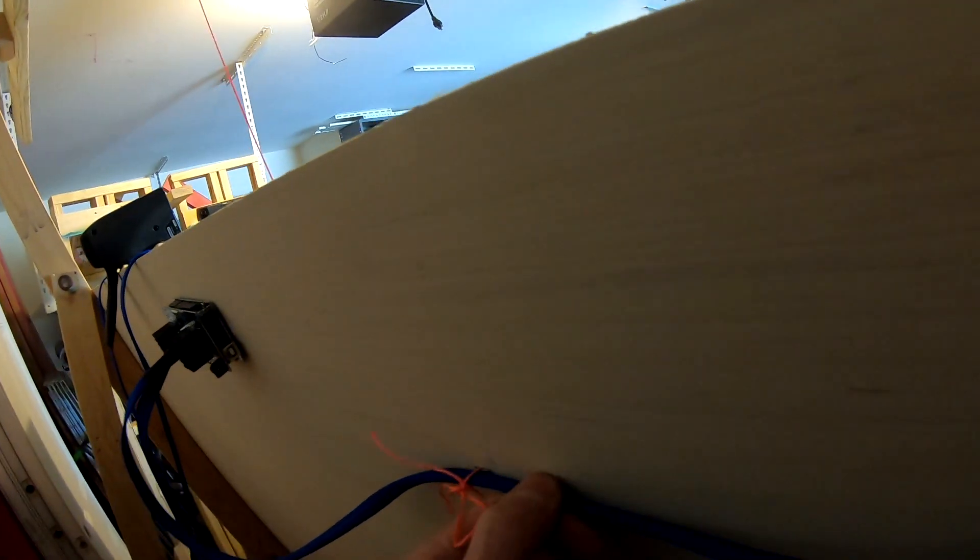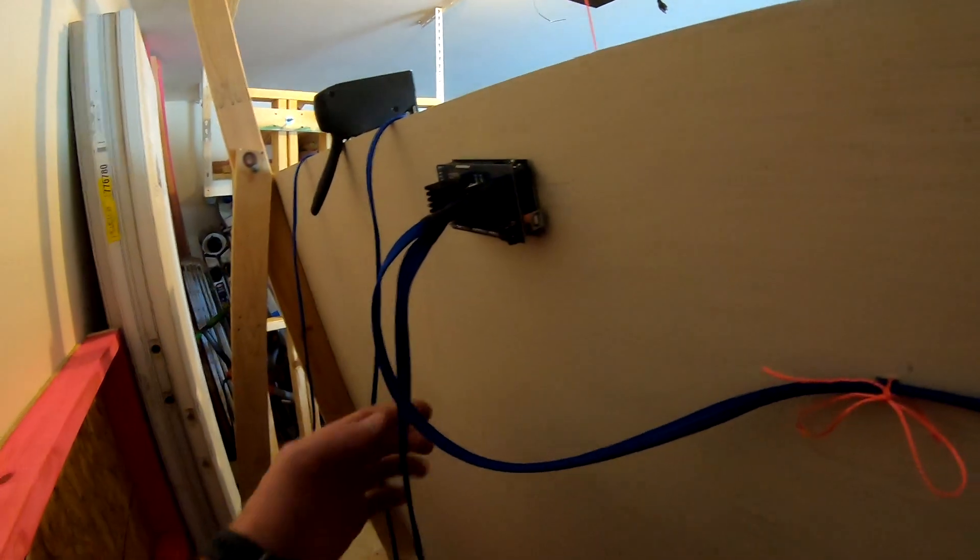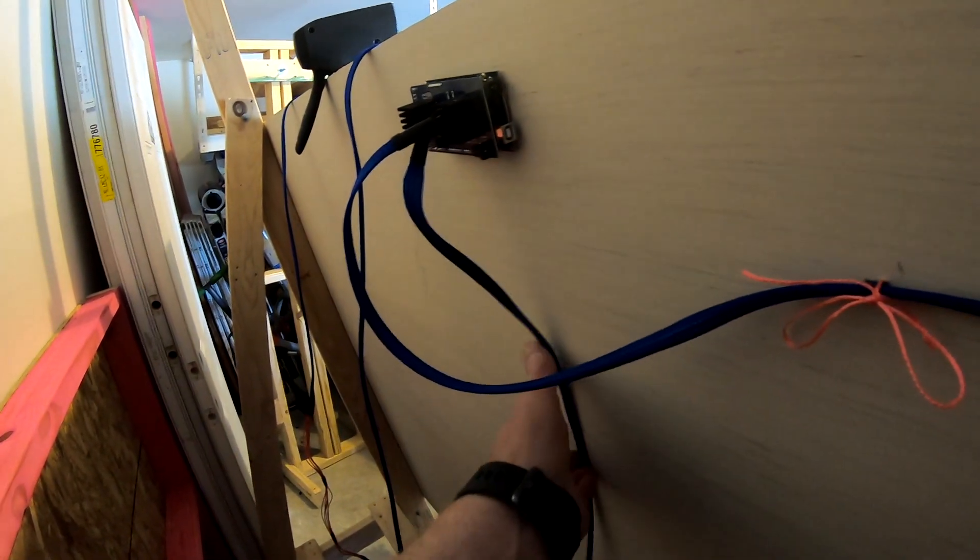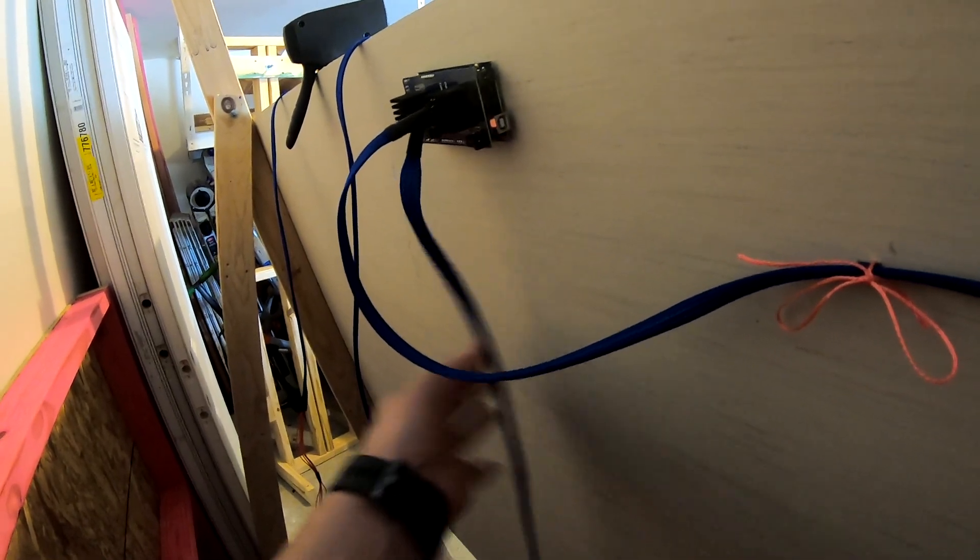That way if I ever have to take this off it's not a complete pain in the butt. That way it's not too firm either. So I gotta do the other side and I might put one or two, maybe just a couple right here, so it can still swing back and forth, just so it's not yanking right on this wiring harness here.